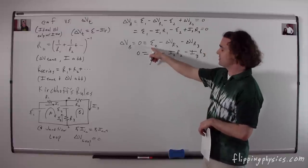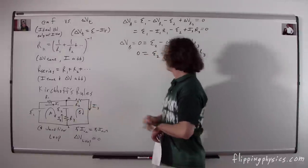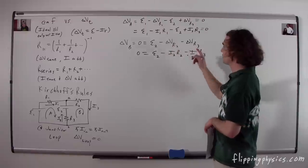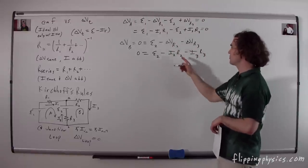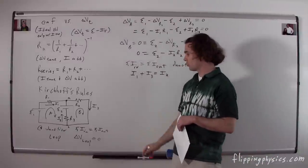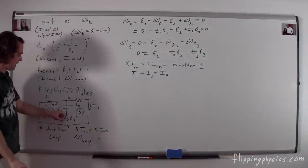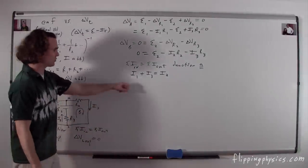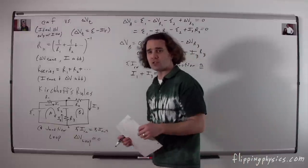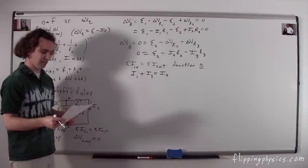The electric potential difference around loop B is also equal to zero. Going in the same direction as negative to positive across EMF₂ is positive. Going in the direction of the current for resistors two and three, the electric potential goes down: 0 = EMF₂ − I₂R₂ − I₃R₃. At junction A: I₁ + I₃ = I₂. We now have three equations to solve simultaneously, typically using row-reduced echelon form on a calculator.